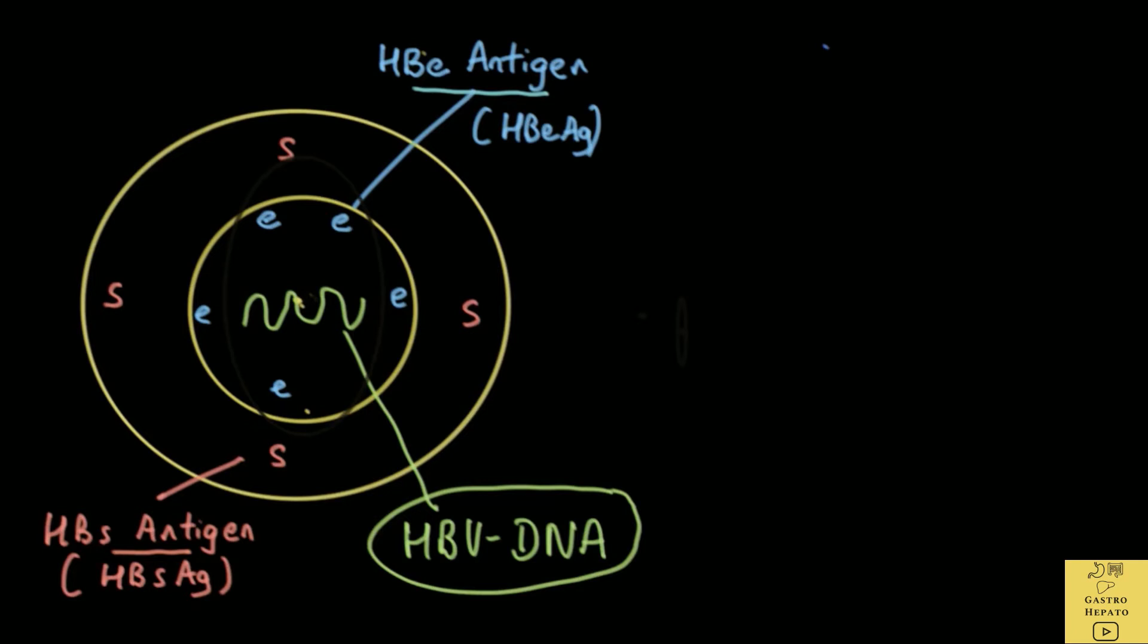Now, let us look at what normally happens when the virus enters the body. Usually, any infection, virus or bacteria, triggers the body to produce antibodies. Antibodies are proteins produced by the immune system to destroy the whole virus or certain parts of the virus. The problem in chronic hepatitis B is that the body is unable to mount an immune reaction. For some reason, the hepatitis B virus does not trigger the immune system to produce antibodies.